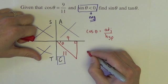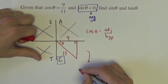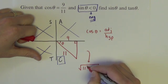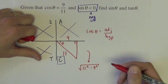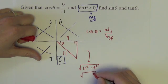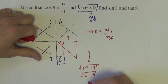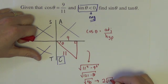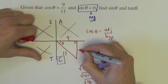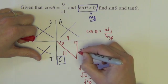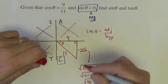This side here would be the square root of 11 squared minus 9 squared, square root of 121 minus 81, which is the square root of 40, simplifying to 2 square root of 10. And I made it negative because we're going down to get into the fourth quadrant.